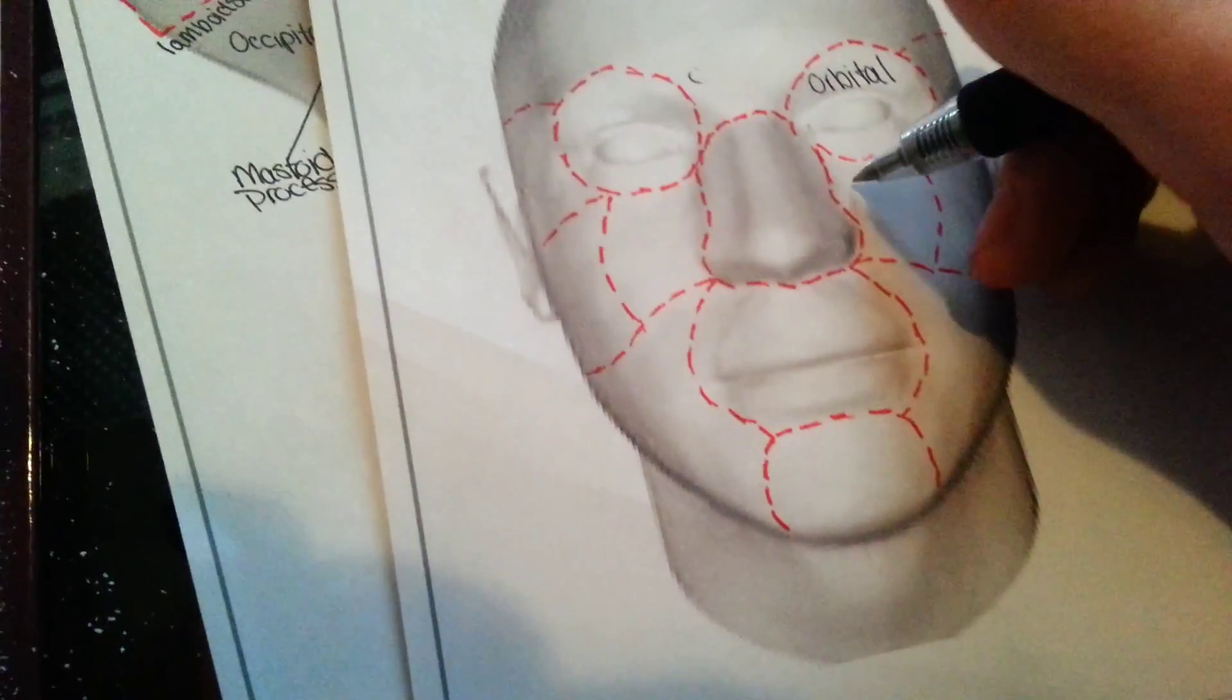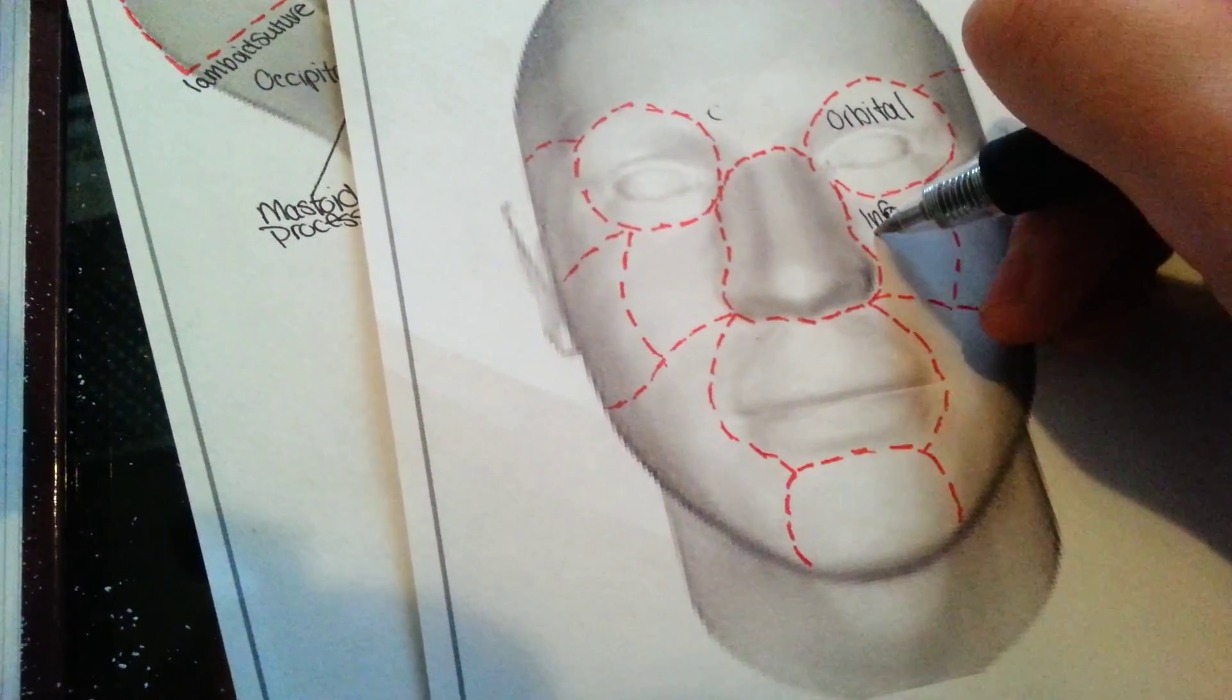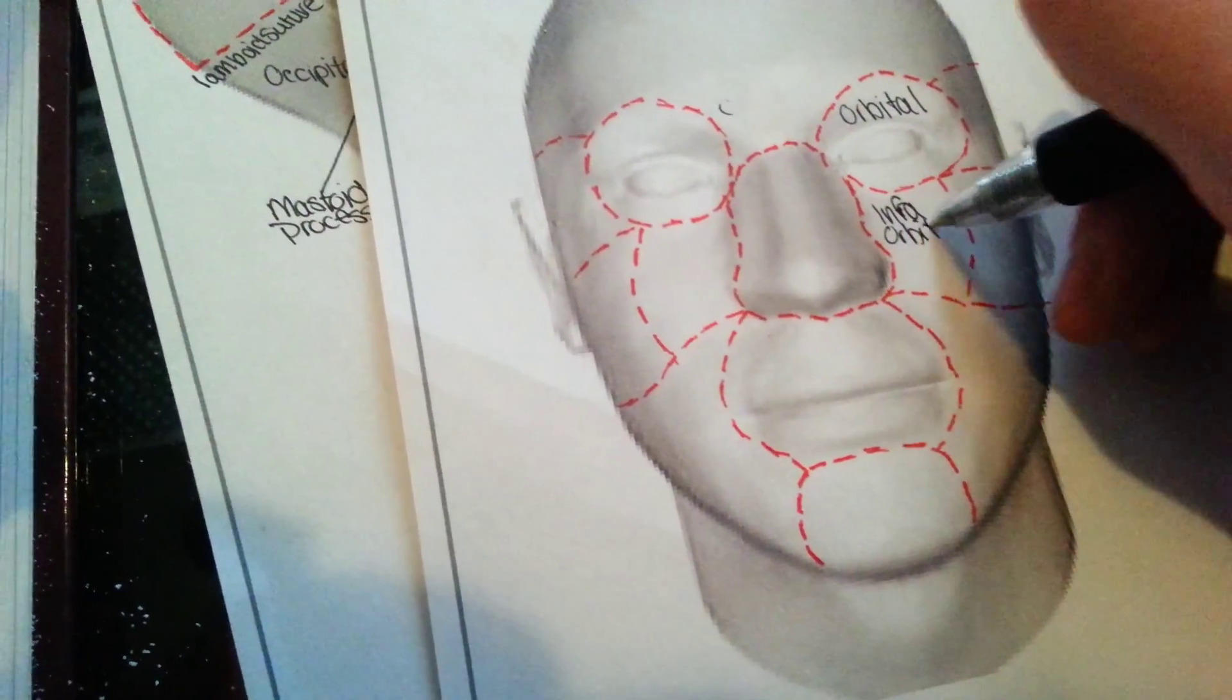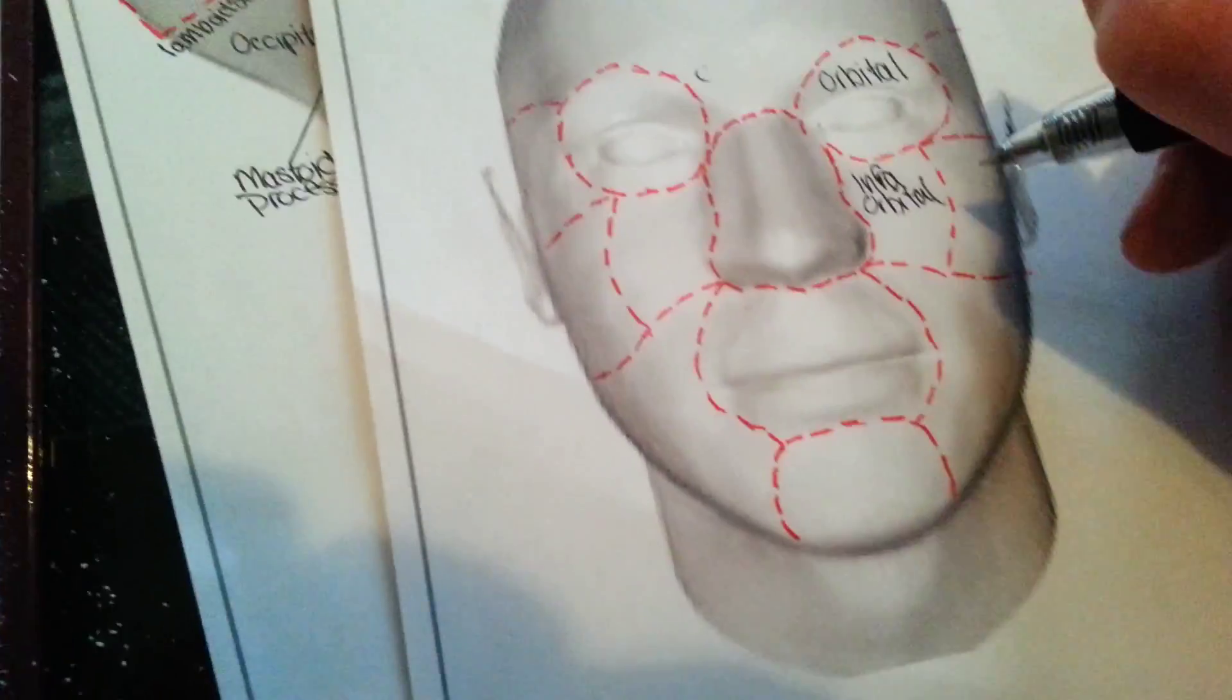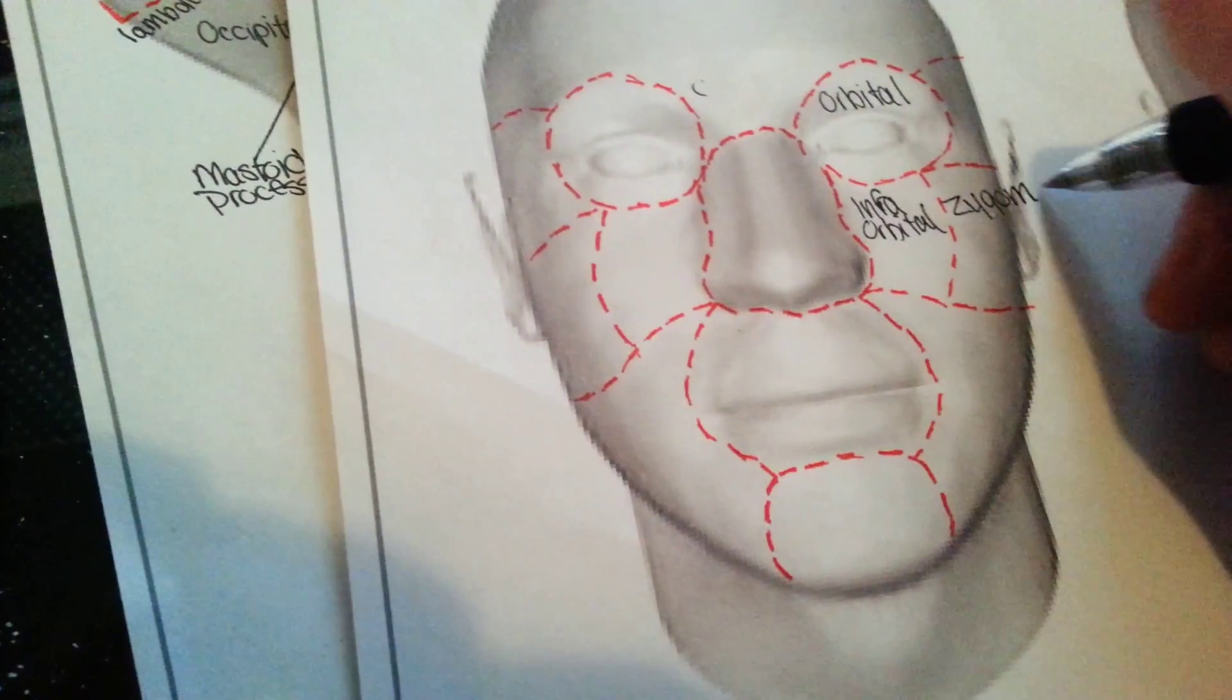Orbital region. Infraorbital. You're going to see on this next to it, which would make this part of the nose. Zygomatic.